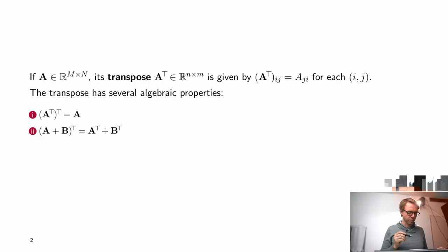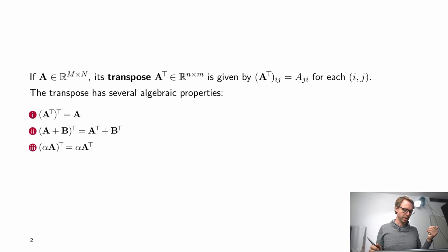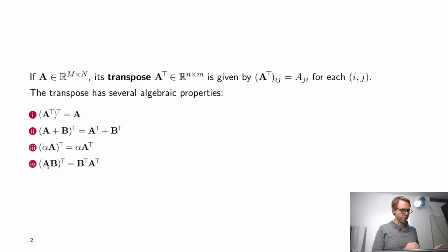The transpose has certain properties. First, the transpose of the transpose is equal to A again. The transpose of the sum of two matrices equals the sum of the individual transposes. If we multiply matrix A by some scalar alpha and take the transpose, that's the same as first taking the transpose and then multiplying by alpha. The transpose of the product AB equals B transpose times A transpose — the order is reversed.